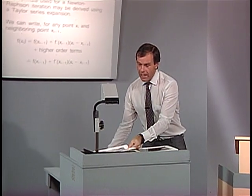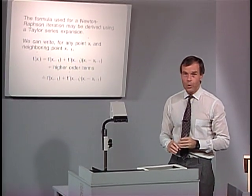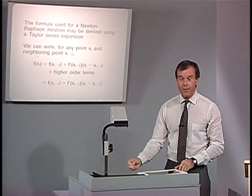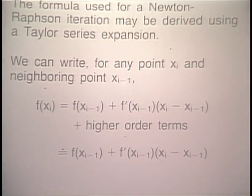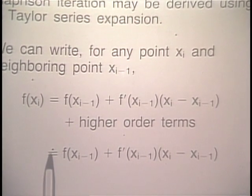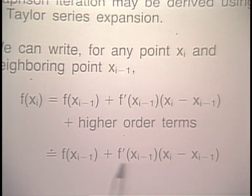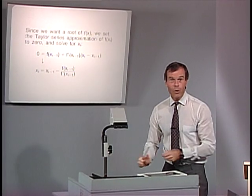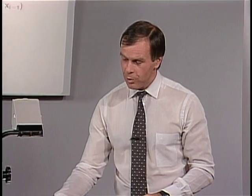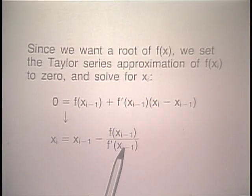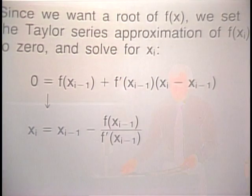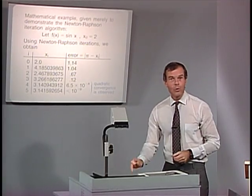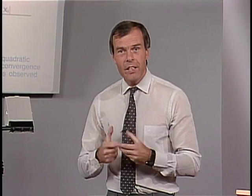If we use the Newton-Raphson formula, it is quite interesting to see how it has been derived. We can write for any point x_i and neighboring point x_{i-1} directly this equation by Taylor series expansion. If we neglect the higher order terms, f(x_i) is approximately equal to this relationship on the right-hand side. Since f(x_i) is supposed to be 0, because we are looking for a zero of the equation, we set it equal to 0, and we get directly the Newton-Raphson formula.